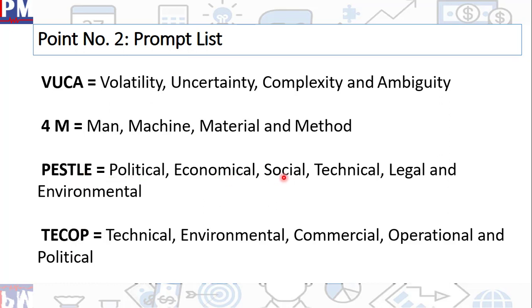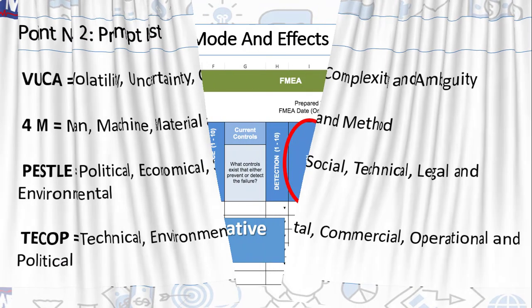PESL is political, economical, social, technical, legal, and environmental. Our Indian army does a lot of PESL before any kind of movement in the border areas. TCOP is equal to technical, environmental, commercial, operational, and political. So these are the prompt list, ready-made categories of risks.